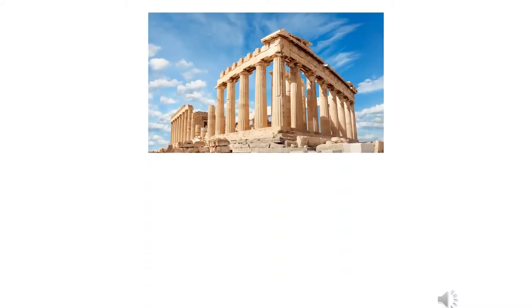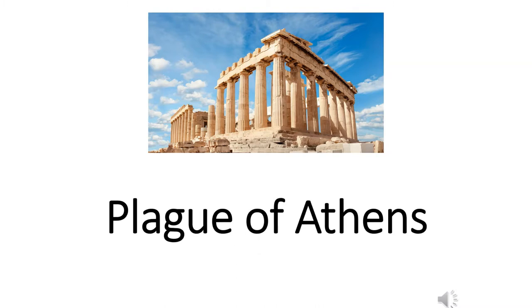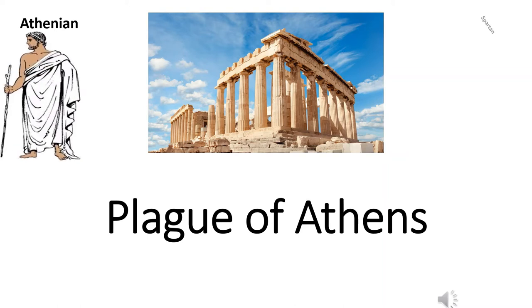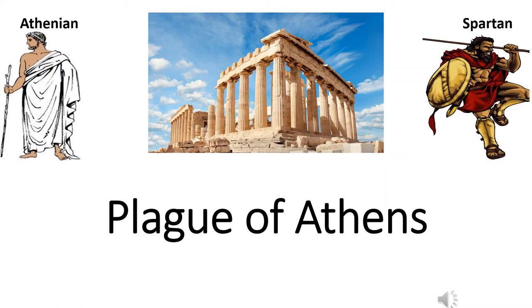Good afternoon everyone. Today I choose the pandemic topic about the Plague of Athens that severely damaged the city in 430 BC. Athenians and Spartans are the main characters in the Athens Plague. Currently we are facing the COVID-19 pandemic — it's not the first time for the world. The world has faced many pandemics before. I gathered the plague-related info from a book written by Thucydides, the historian of Athens.